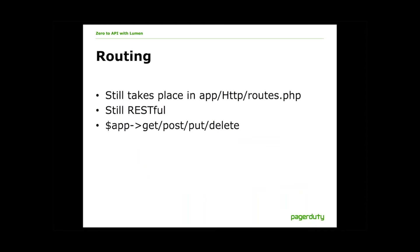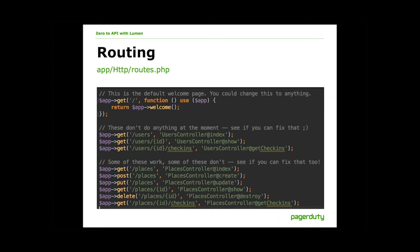Routing still takes place in the routes file, and it's still RESTful. But instead of using facades and things like that, you're just using the app variable. You can still do GET, POST, PUT, and DELETE. If you're familiar with routing in Laravel, this is not going to be hard to understand at all. You can see we have a default welcome page here, and you can still bind these to controllers — in fact, it's encouraged. You can still do closures if you feel so inclined. The app variable is loaded via bootstrap.php. It's super simple HTTP methods, making it very easy to start building an API right off the bat.